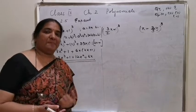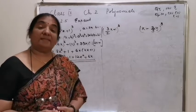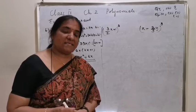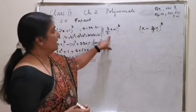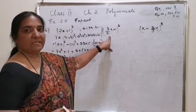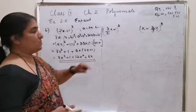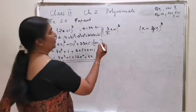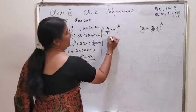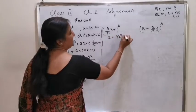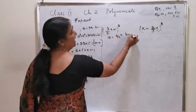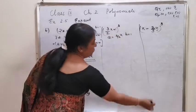In a plus b plus c the whole square there were 6 terms. Similarly, for 3 by 2x plus 1 the whole cube, your a value is 3 by 2x and the b value is 1.